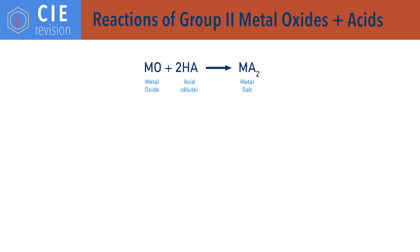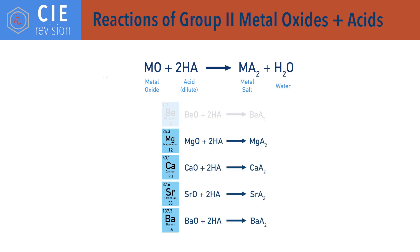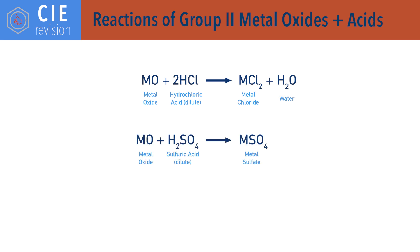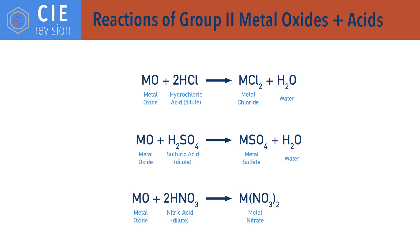Group 2 metal oxides react with dilute acids to form metal salts and water, with a general reaction of metal oxide plus acid to salt and water. The salt formed depends on the dilute acid used: metal oxide plus dilute hydrochloric acid forms metal chloride and water; metal oxide plus dilute sulfuric acid forms metal sulfate and water; metal oxide plus dilute nitric acid forms metal nitrate and water. For reactions with dilute hydrochloric and nitric acid, the reactions get more vigorous down the group.